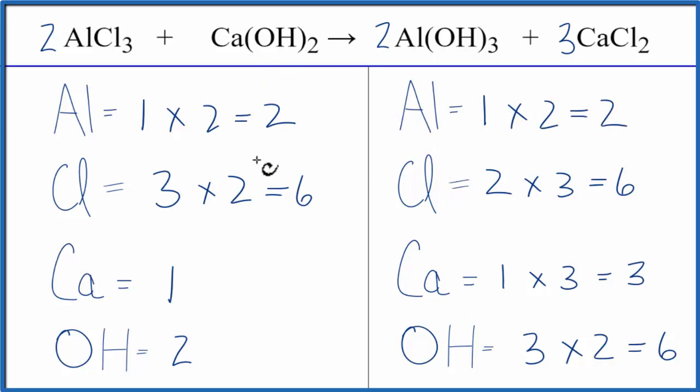On this side of the equation, we need six hydroxides. We only have two. So we'll put a three in front of the calcium hydroxide. So the two hydroxides, two times three, that gives us six. And then for the calcium, one times three, that gives us three, and those are balanced.